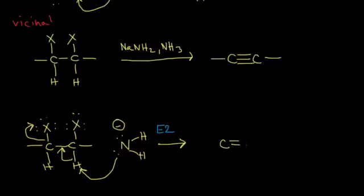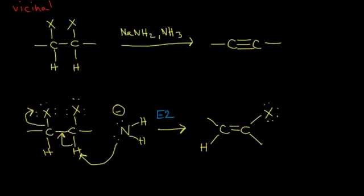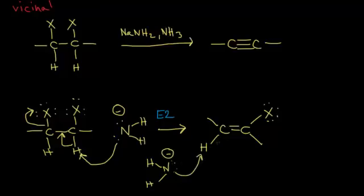After the first E2, we now have carbon double bonded to another carbon with a hydrogen and a halogen remaining. We need one more reaction to form our alkyne. Another E2 elimination: another amide anion comes along, functions as a base, the lone pair of electrons takes the proton, the electrons kick in to form our triple bond, and the halogen leaves. So we form our alkyne. You can produce alkynes from either vicinal or geminal dihalides via a double E2 elimination reaction.